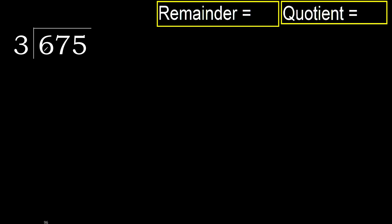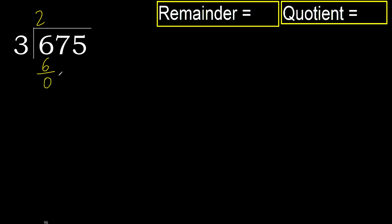675 divided by 3. 6 is not less, therefore with 6: 3 multiplied by which number is nearest to 6 but not greater? 3 multiplied by 3 is 9, which is greater. Multiplied by 2: 6 is not greater. Subtract. Next.